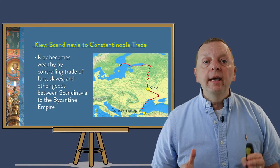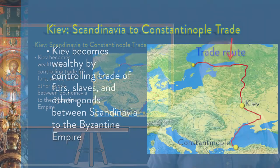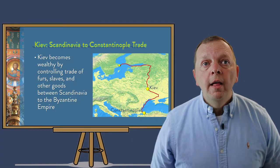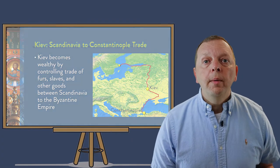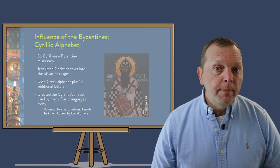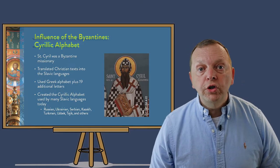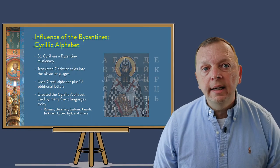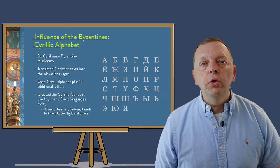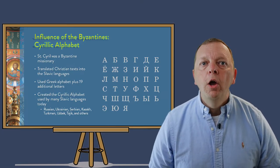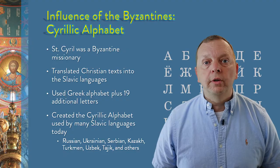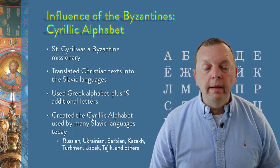The Kievan Rus built wealth as Kiev's location in Ukraine allowed the empire to control trade between Scandinavia and the Byzantine Empire for various goods, including furs and slaves. This connection with the Byzantine Empire not only brought wealth, but also introduced several cultural aspects to the region. For example, when St. Cyril, a Byzantine missionary, began to translate Christian texts into the Slavic languages, he used his own Greek alphabet and added 19 additional letters for sounds specific to the Slavic languages. The result is the Cyrillic alphabet, named after him, which is used by many of the region's languages including Russian, Ukrainian, and most of the primary languages of Central Asia, such as Kazakh, Uzbek, Turkmen, and many others.